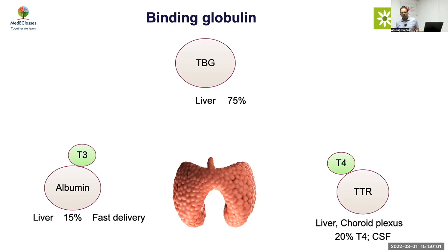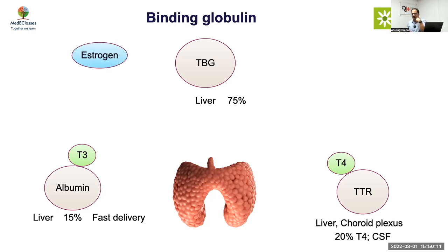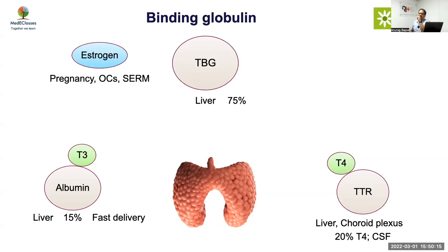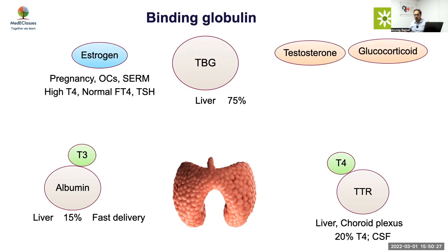When measuring total hormones, you need to know if there are any conditions affecting overall thyroid functioning. Estrogen will increase TBG, which means if somebody is pregnant, on OC pills, or on SERMs, you will have high total T4, normal free T4, and normal TSH. This is what you need to understand.